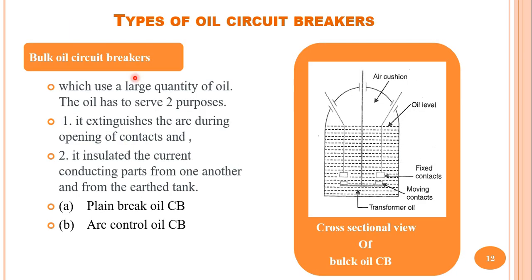Oil circuit breakers are mainly classified as bulk oil circuit breakers and low oil circuit breakers. In bulk oil circuit breakers, a large quantity of oil is used and it serves mainly two purposes: it extinguishes the arc during opening of the contact, and it is used as an insulating medium — insulating the current-conducting parts from one another and from the earthed tank. The two types of bulk oil circuit breakers are plain break and arc control oil circuit breakers.